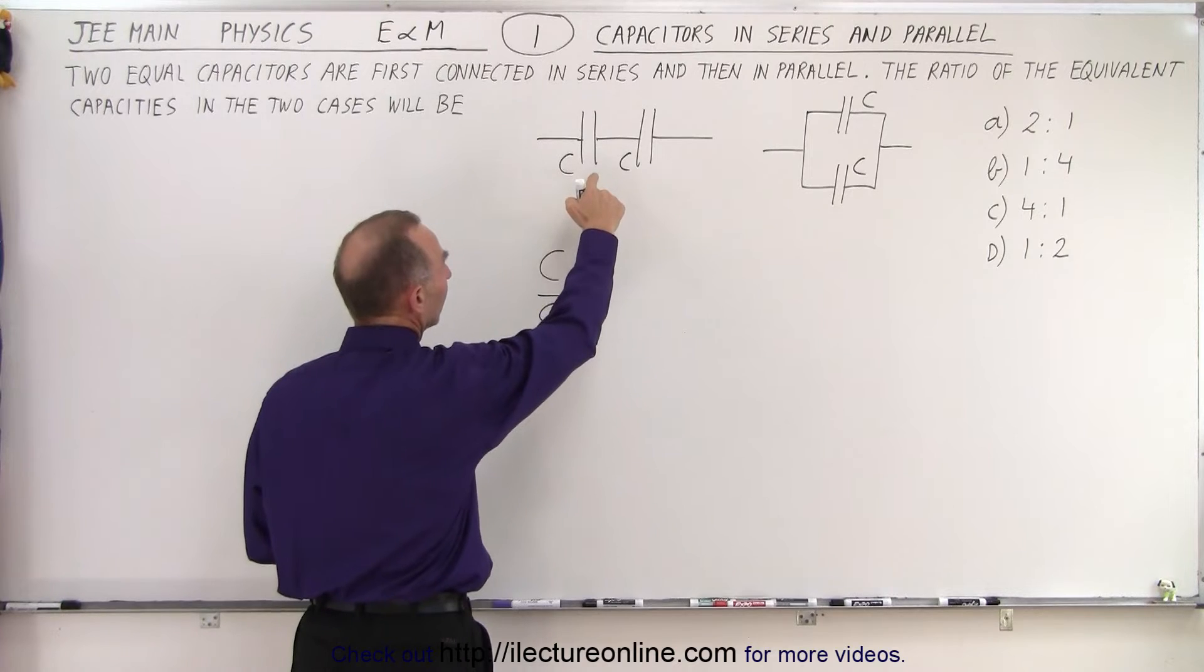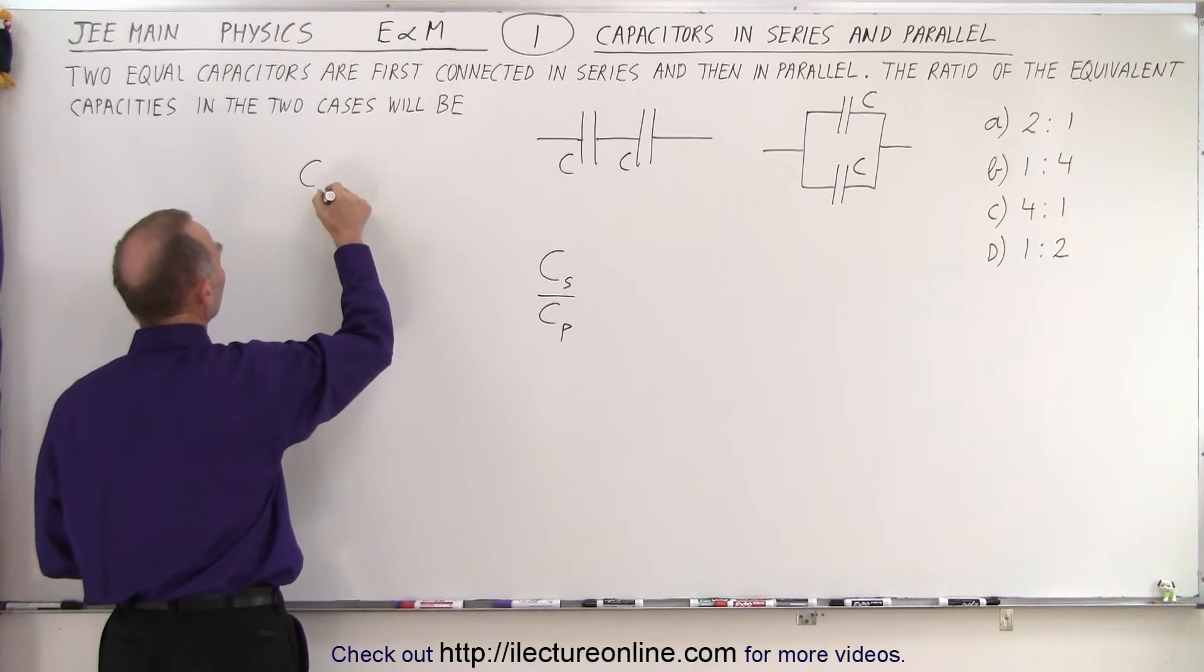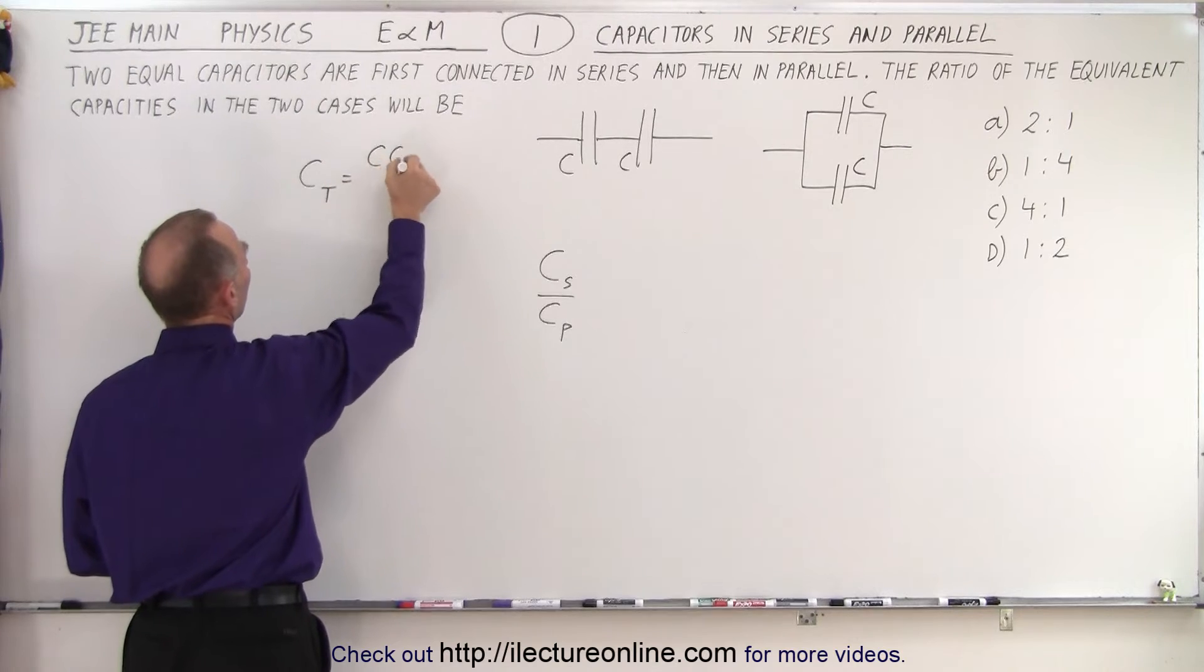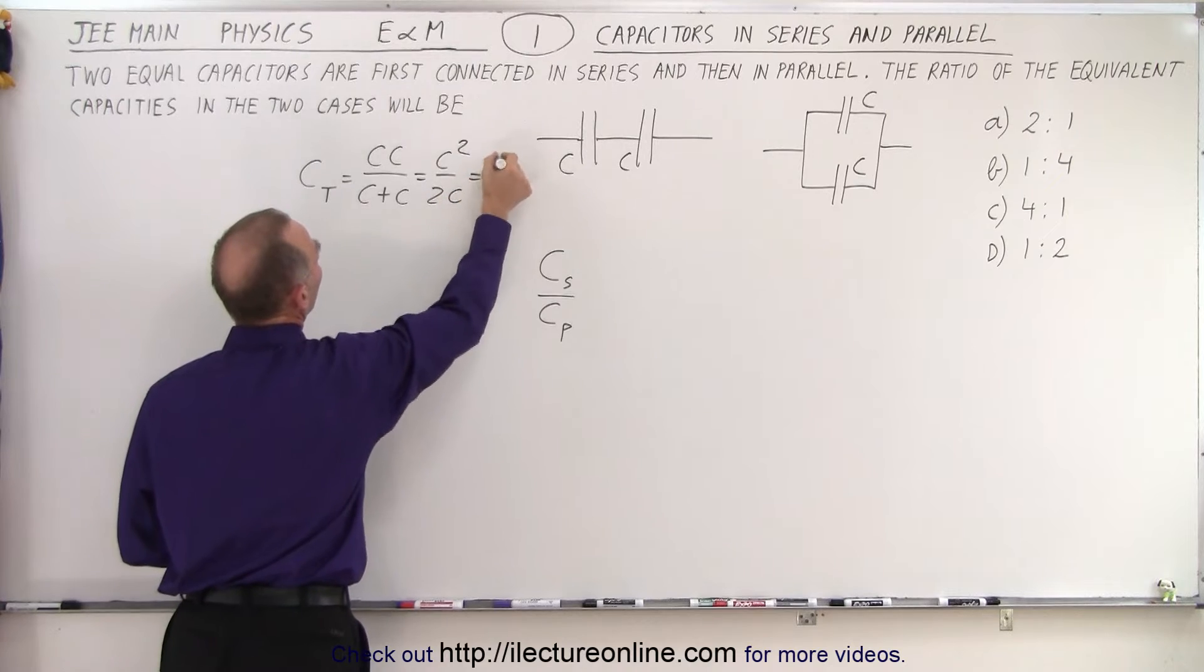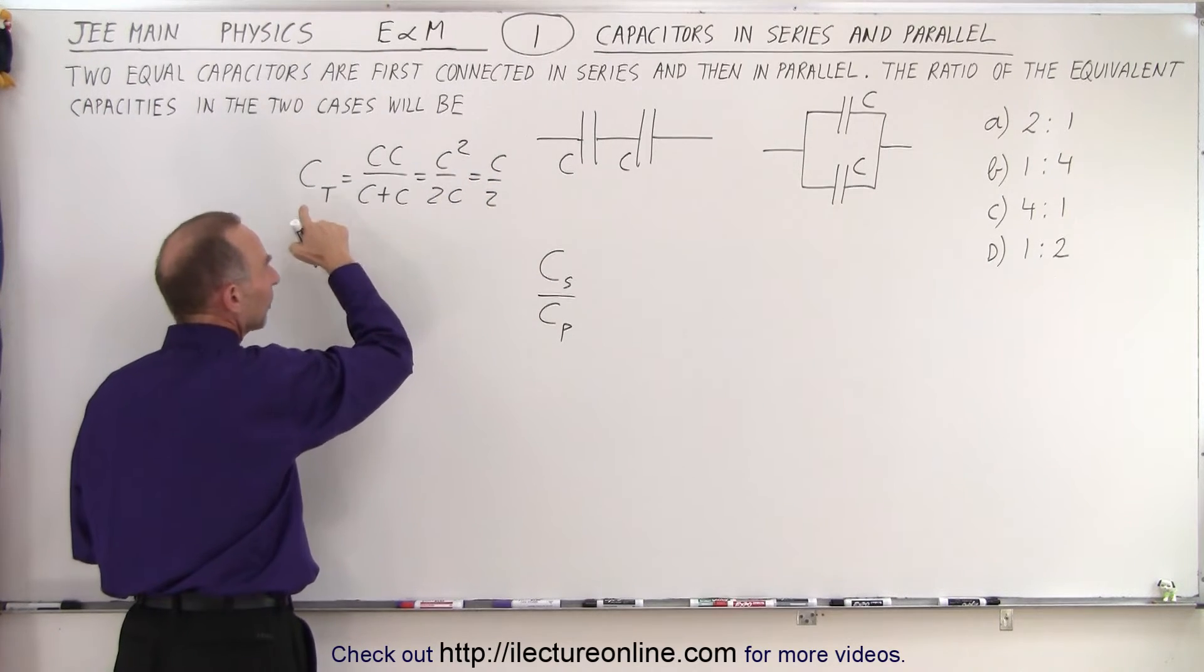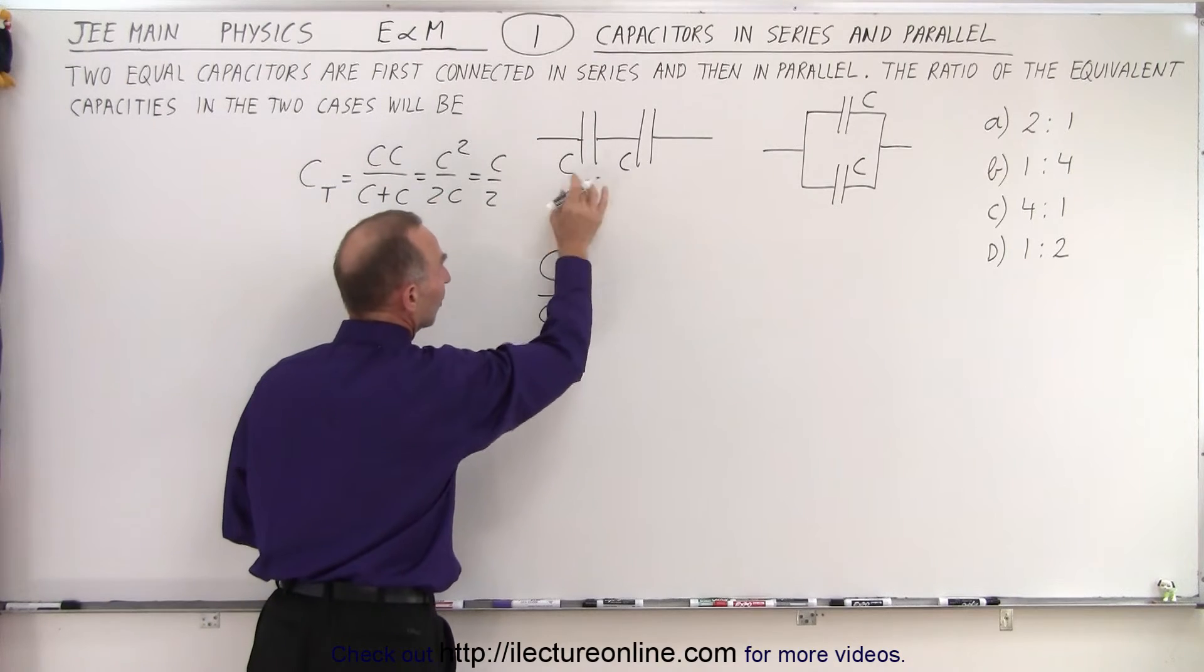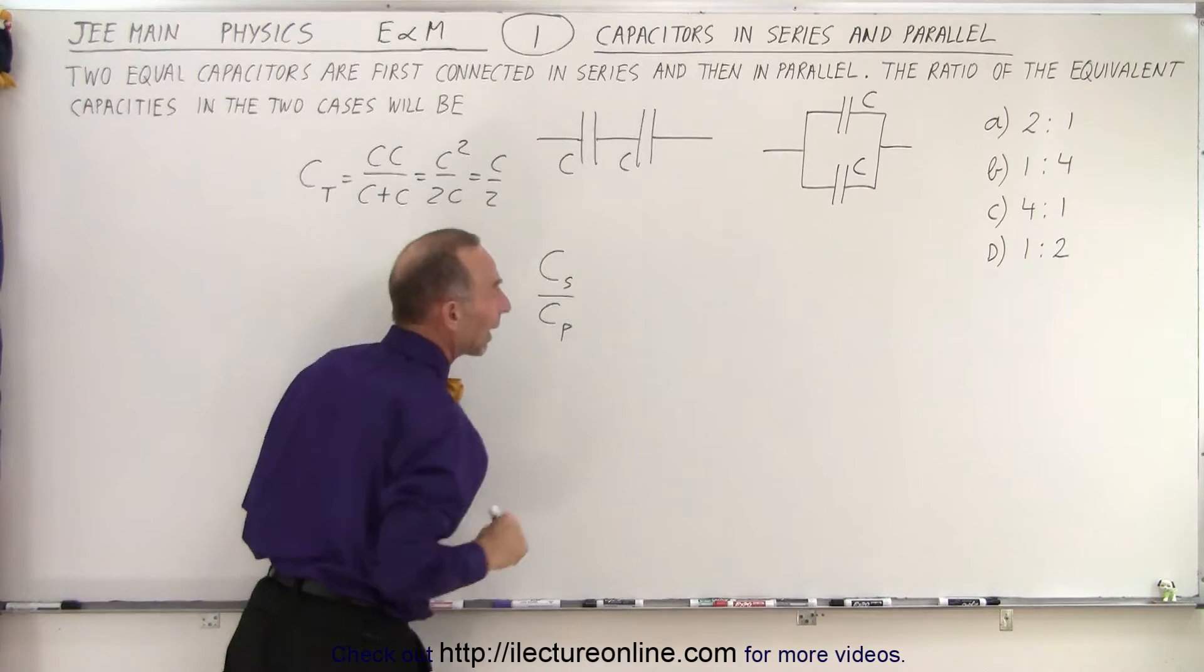Well, it turns out that when you connect capacitors in series, the equivalent capacitance, the total capacitance, is equal to the product over the sum. And so this would be C squared over 2C or C divided by 2. In other words, the capacitance of two capacitors that are equal in size in series ends up being half the capacitance of one.